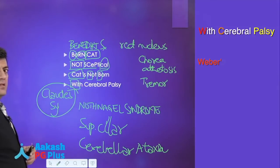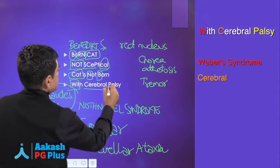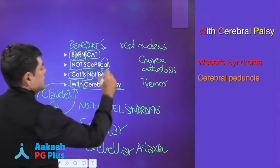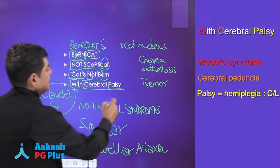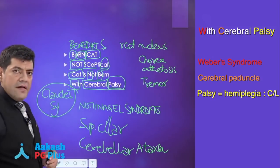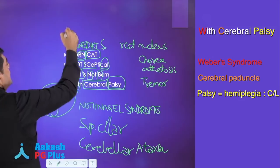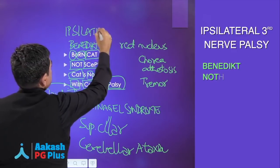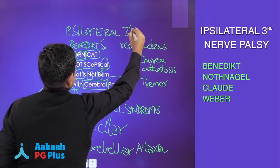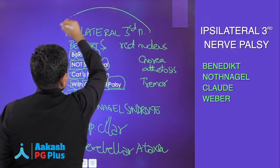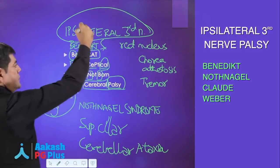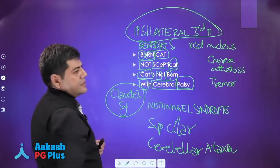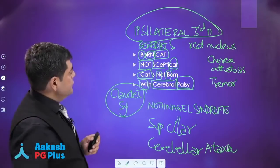W is Weber's syndrome. The cerebral peduncle gets affected and there is a contralateral hemiplegia. In all these patients there will be an ipsilateral third nerve palsy — third nerve palsy syndromes with contralateral features, with the structures that get affected. That simplifies things for you.